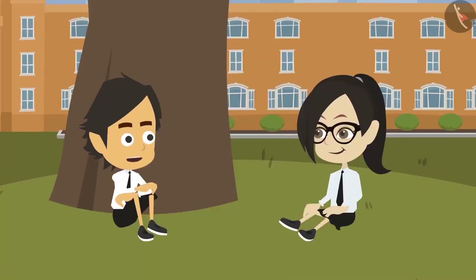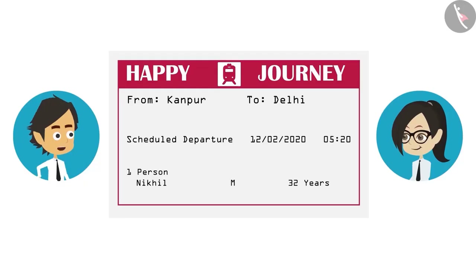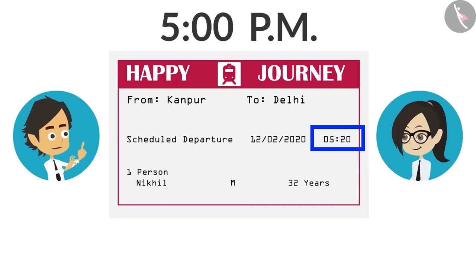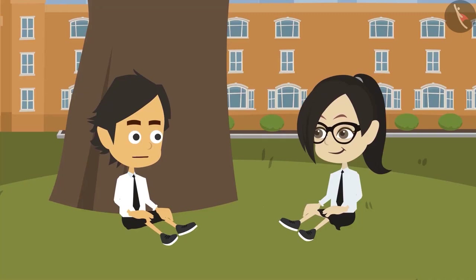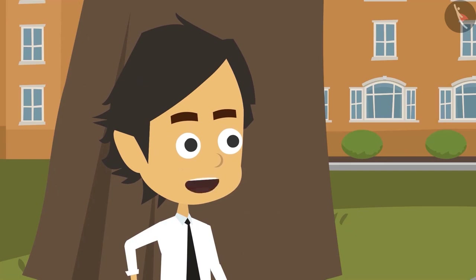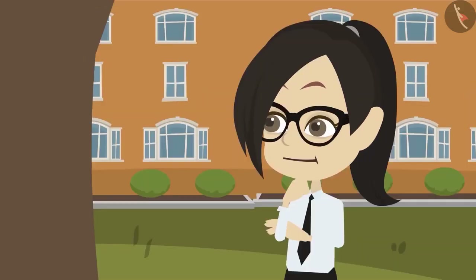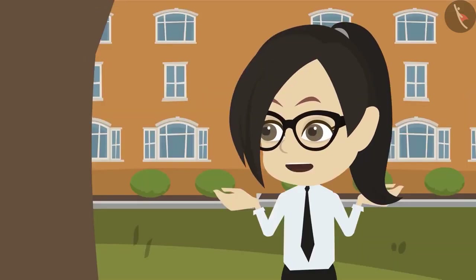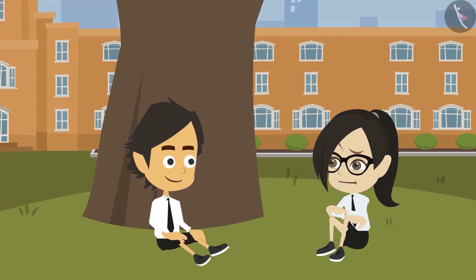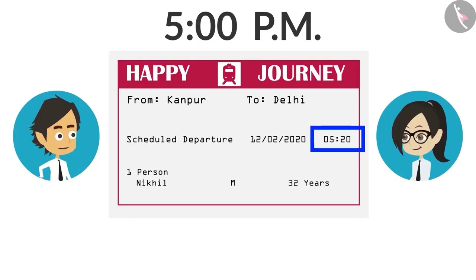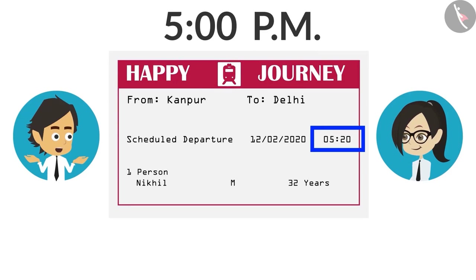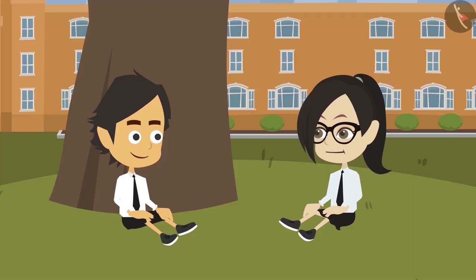The time written on his train ticket was 20 minutes past 5 o'clock. He reached the railway station at 5 o'clock in the evening and kept waiting, but the train did not come. He found out that the train had already left — that's why he could not come. The riddle is: he reached the station before the time given on the ticket, yet how did he miss his train?